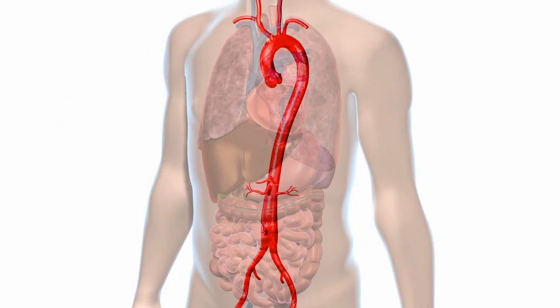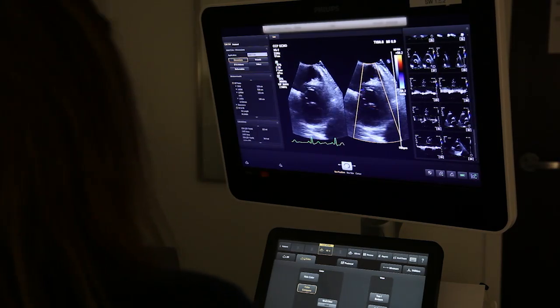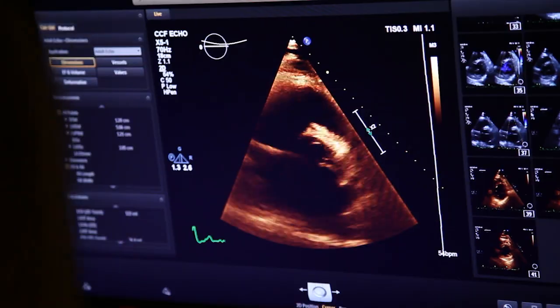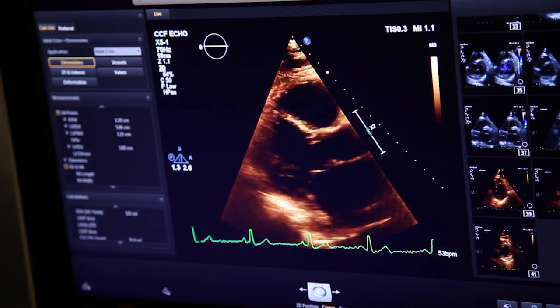It's possible to have an enlarged aorta and not know it. That's why it's important for family members of someone who has aortic disease to have their arteries examined with cardiovascular imaging, such as an echocardiogram or CT scan.